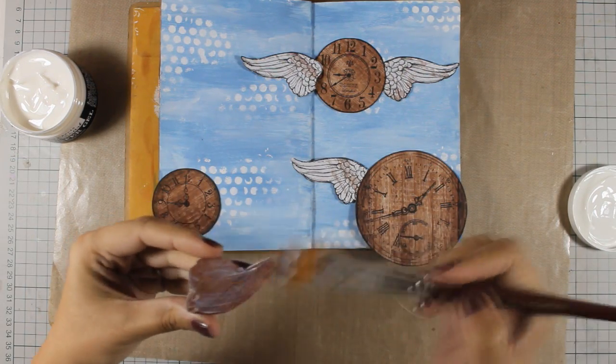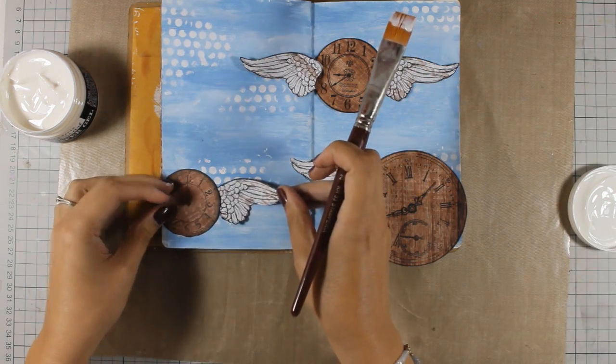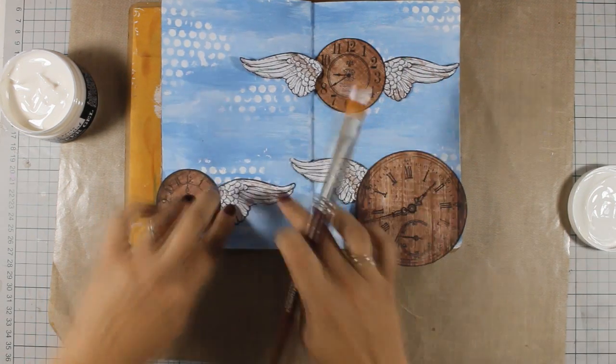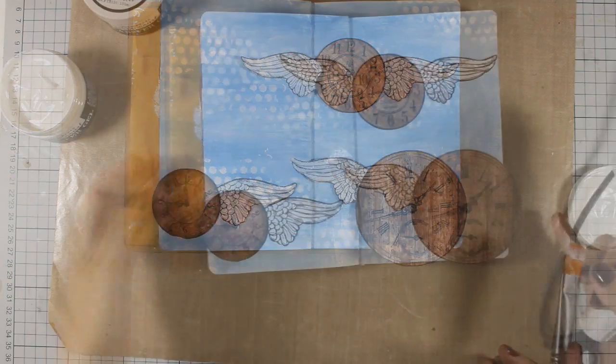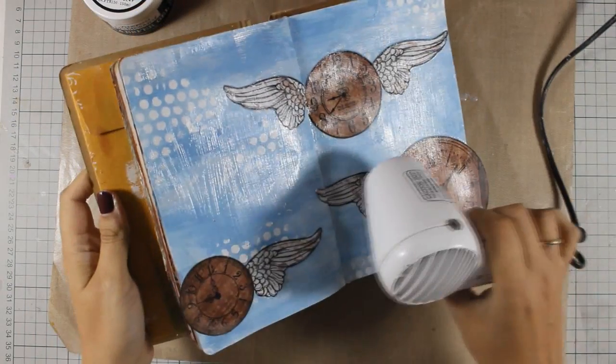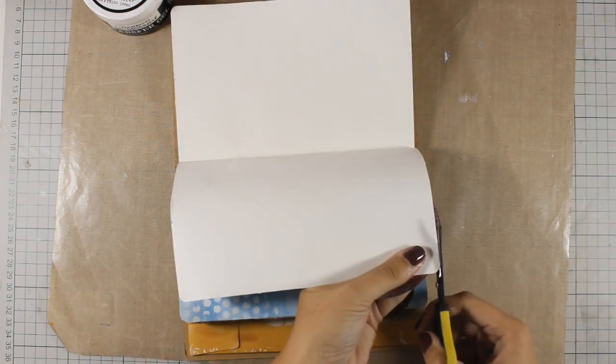And once I stick everything down then I am going to use this transfer gel and go all over those pages to cover everything. This is going to give a nice finish. So I'm using my heat gun to speed up the drying process.